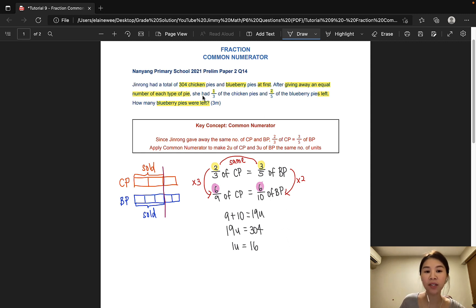Going back to the question, how many blueberry pies were left? The number of blueberry pies left would be 4 units, since 6 out of 10 units have been sold. So, 4 units would simply be 16 times 4, and that would give us 64. And that is the answer to this question.